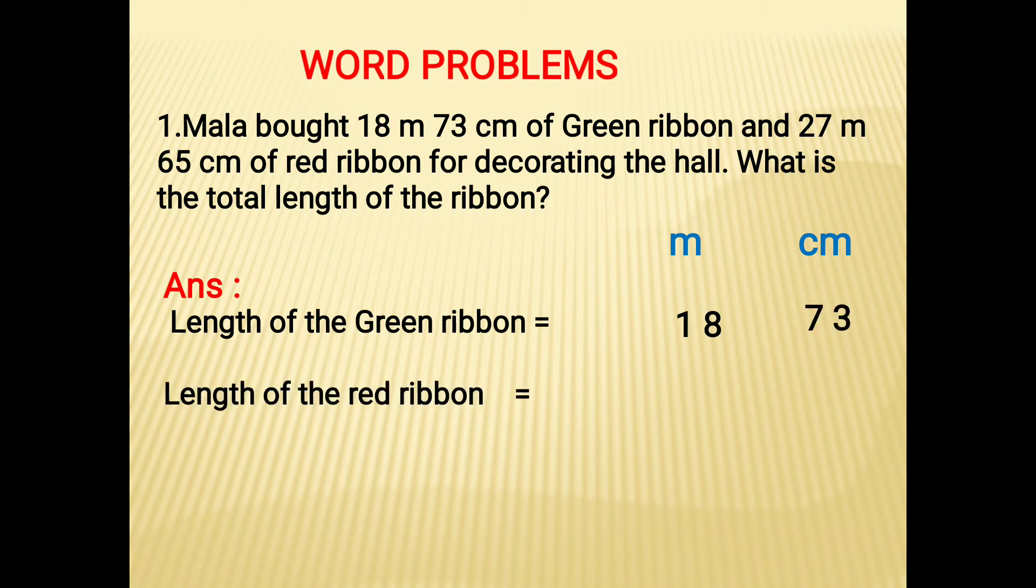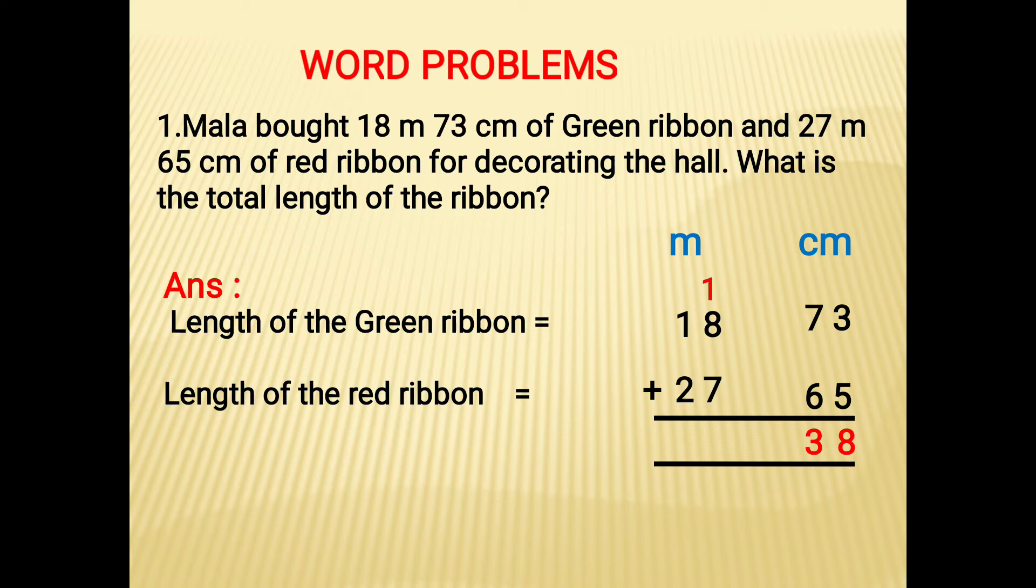Then length of the red ribbon is 27m 65cm. Now add the values. In centimeter, 3 plus 5 is 8, 7 plus 6 is 13. 13 is a two-digit number, so we place 3 in the ones place and 1 goes to carry over.